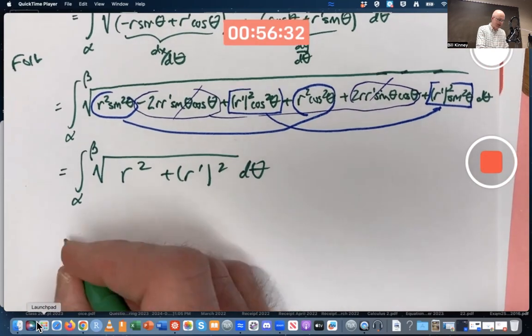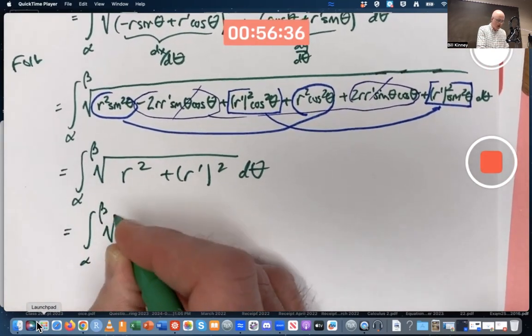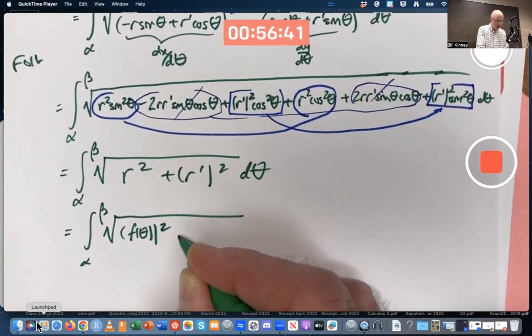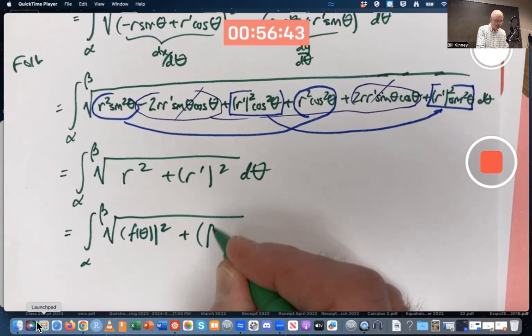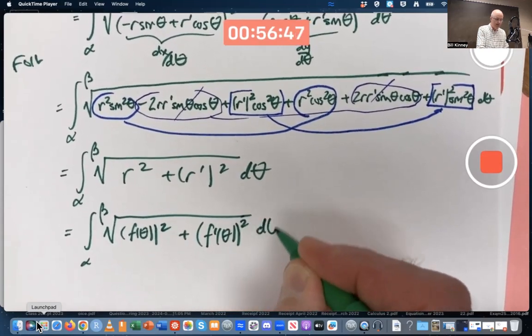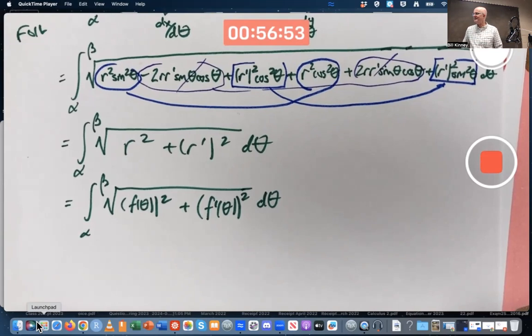It probably would be best to go back to f(θ) notation now. R is f(θ). So I get square root of f(θ)² plus f'(θ)². F'(θ), that gets squared as well, dθ. Is this a difficult integral to do for our example? It is actually.